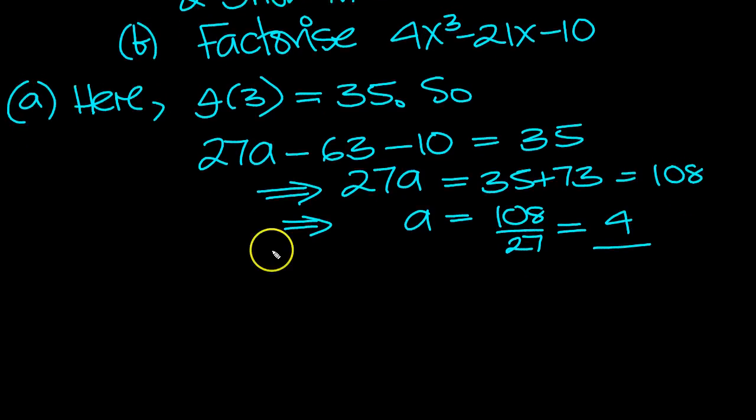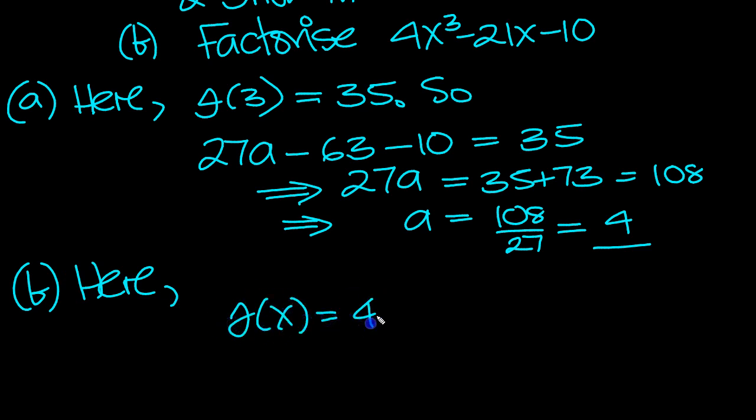Now it says factorize this, so part b then. f of x is equal to 4x cubed minus 21x minus 10.